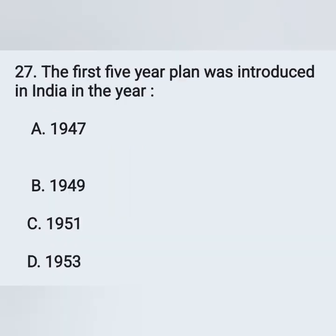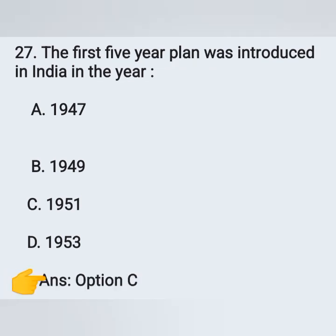Question 27: The first five-year plan was introduced in India in the year — options: option A, 1947; option B, 1949; option C, 1951; option D, 1953. The correct answer is option C, 1951. The first five-year plan was introduced in India in the year 1951.